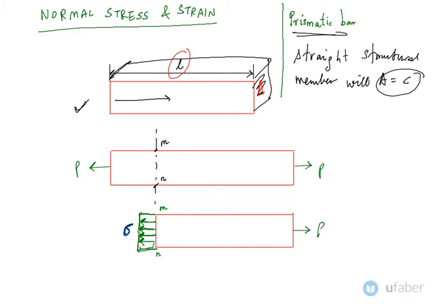Now this prismatic bar is being acted upon by a load P which is trying to pull it apart. When it tries to stretch it, the prismatic bar is elongated by this much amount, delta L.